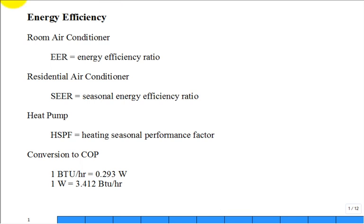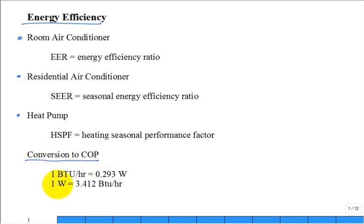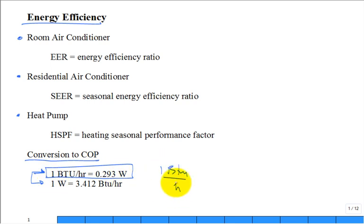I'd like to talk about energy efficiency. We have ratings for room air conditioners, energy efficiency ratings for residential buildings, and heat pump efficiency ratings. In all of these we're going to use conversion factors — these two are reciprocals of each other. The one I'll use a lot is: 1 BTU per hour is equivalent to 0.293 watts.